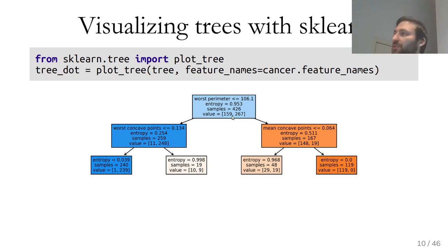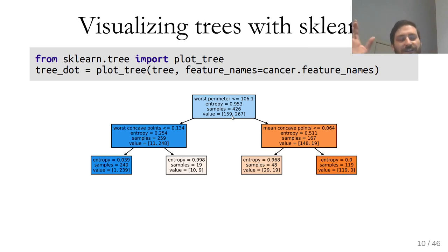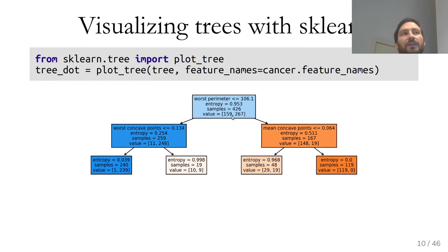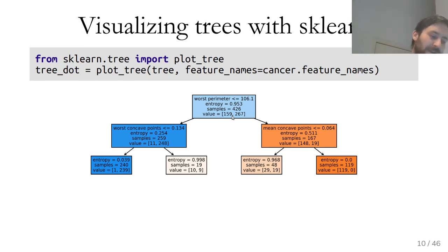There's also an export to the DOT language, a graph layout language that arranges graphs nicely. For large trees, the plot_tree function may not work super well, so exporting to Graphviz — the library for DOT format — works better for bigger trees. There's an export_graphviz function for that, though Graphviz can be a bit annoying to install.